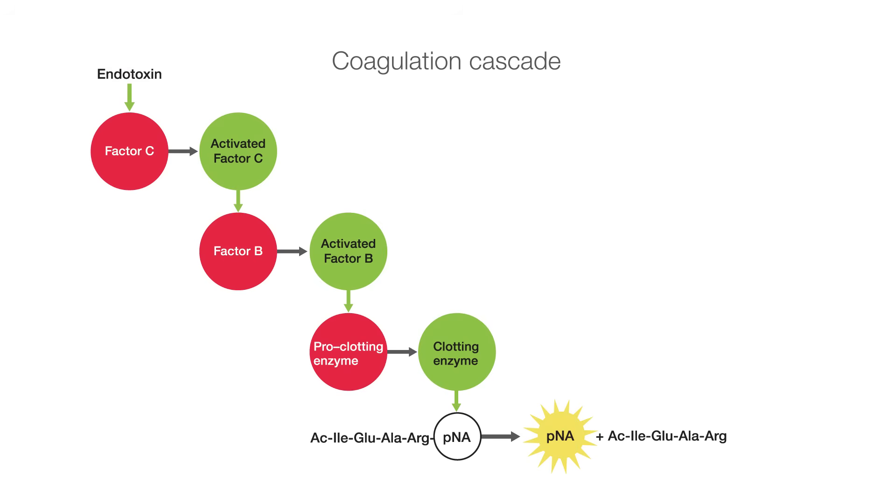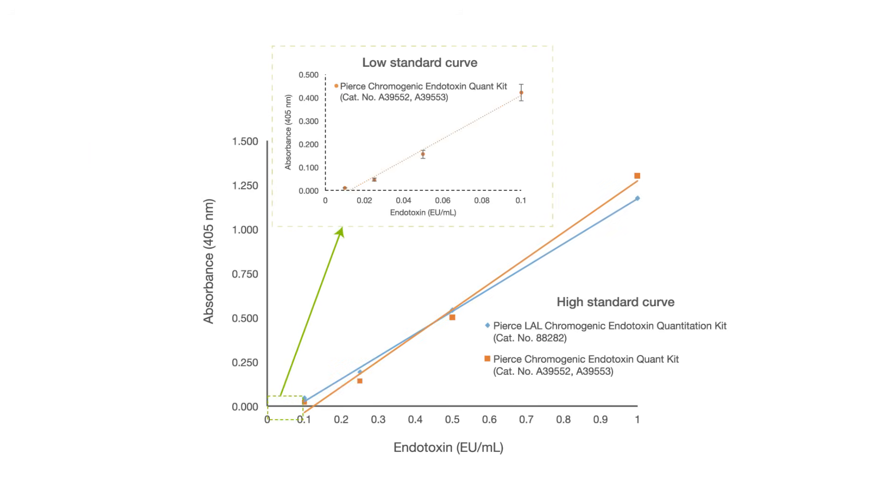After stopping the reaction, the released PNA is photometrically measured at 405 nanometers. The correlation between absorbance and endotoxin concentration is linear and the developed color intensity is proportional to the amount of endotoxin present in the sample and can be calculated using a standard curve.